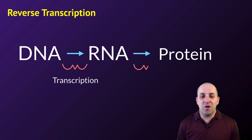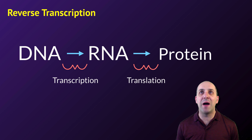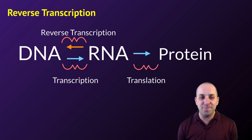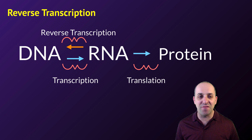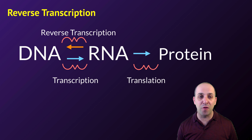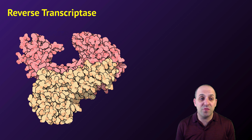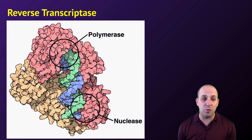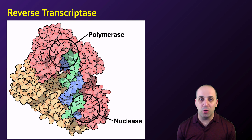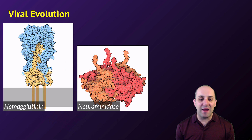The most interesting part of the HIV life cycle is reverse transcription. Normally, DNA is transcribed into RNA, which is then translated into protein — that's the standard flow of biological information. Reverse transcriptase does something fundamentally different: it takes the RNA genome of HIV and turns it back into a DNA copy, going in exactly the opposite direction. This only happens in retroviruses. You can see it in this image, with the RNA in green and the DNA molecule in blue.